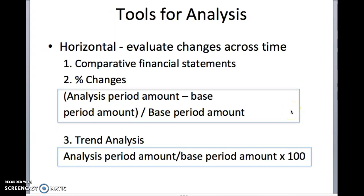For example, you have your financials for year 2016 and you want to compare it with your financials for 2017. Your base period amount should be the older year — in this case, that's year 2016. And then for analysis period amount, that will be the peso value in your 2017 financials. So you can do that for, let's say, sales — you can compare by how much did sales grow from year 2016 to 2017 using this.